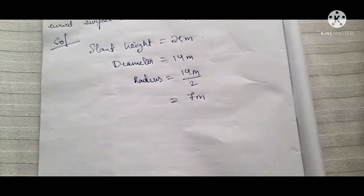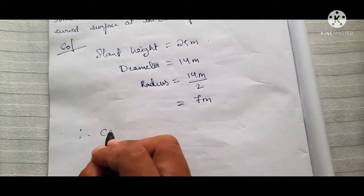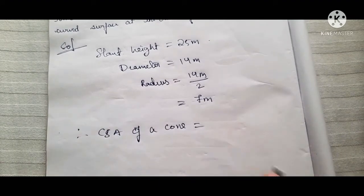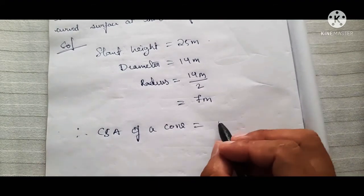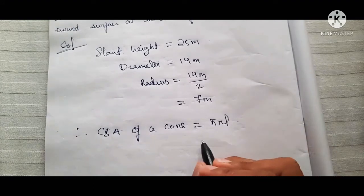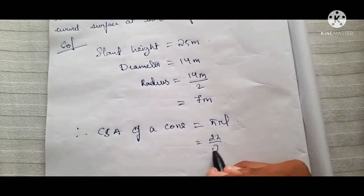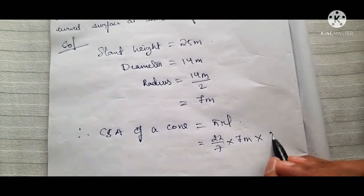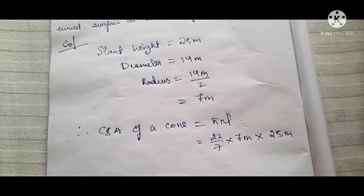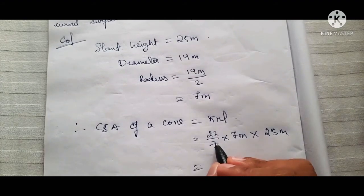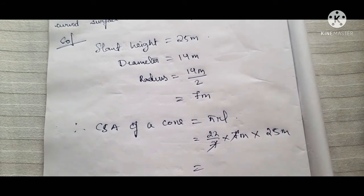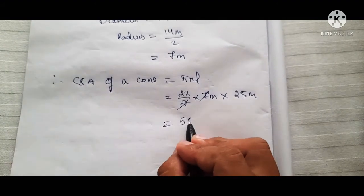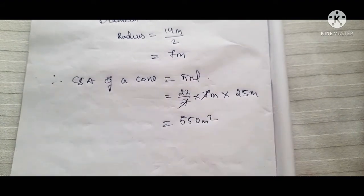Therefore, the curved surface area of a cone. The formula for curved surface area of a cone is pi times r times l. Pi is 22 by 7, radius is 7 meters, and slant height is 25 meters. The 7s cancel, giving us 22 times 25, which equals 550 meters square.